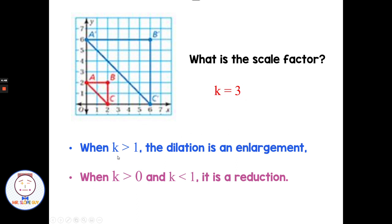Two key points to write down: when K is greater than 1, the dilation is an enlargement — that makes sense because multiplying by a number greater than 1 gives a larger outcome. And when K is between 0 and 1, the dilation is a reduction. Multiplying by a fraction like one-half, one-third, or one-fifth gives a smaller number. So scale factors greater than 1 produce an enlargement, and scale factors between 0 and 1 produce a reduction.